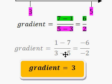Here's a grey bit. What is that all about? That's just, if you happen to do it the other way around, instead of 7 take away 1, you do 1 take away 7, and instead of 5 take away 3, you do 3 take away 5, you get minus 6 divided by minus 2, which is also 3. So it doesn't matter which way around you take away the numbers.